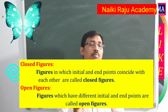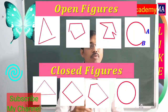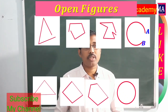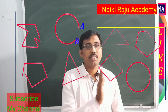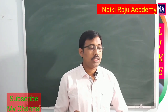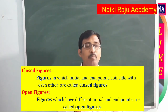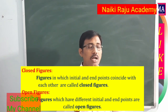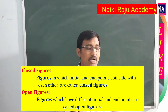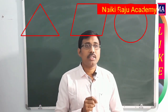Open figures means the initial point and end point are both different. Closed figures means the initial point and end point are both the same. The above four figures are open figures; the below four figures are closed figures. A closed figure is one in which the initial and end points coincide with each other. An open figure has different initial and end points.